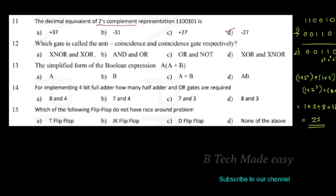Next question: which gate is called the anti-coincidence gate and which is the coincidence gate, respectively? The anti-coincidence gate is XOR and the coincidence gate is XNOR.